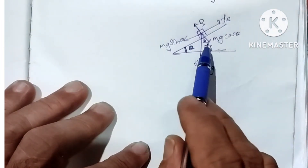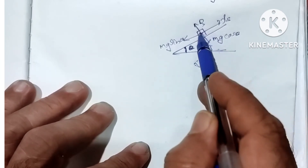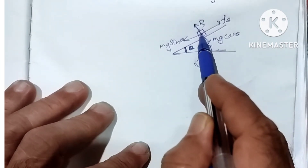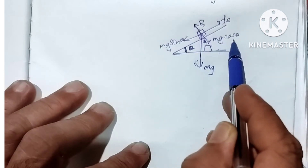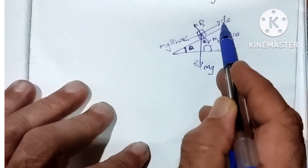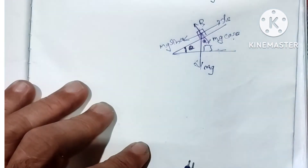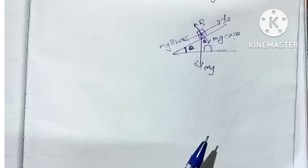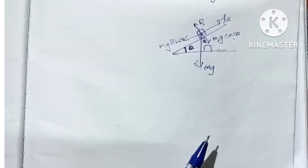If you apply the condition of equilibrium, you balance the four forces. Then there is a normal reaction. The normal reaction is equivalent to Mg cos theta. If you want the friction force, then Fs equals Mg sin theta. This is the angle of friction.